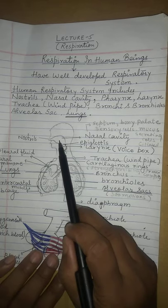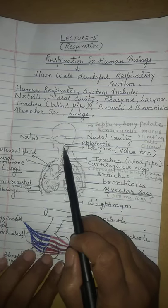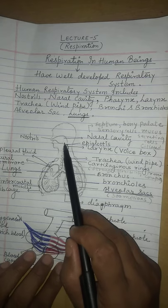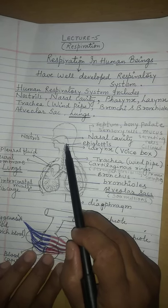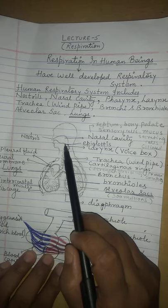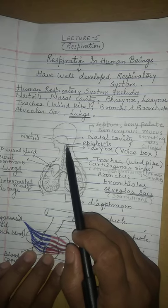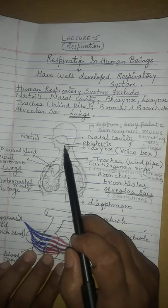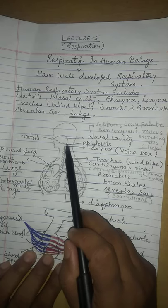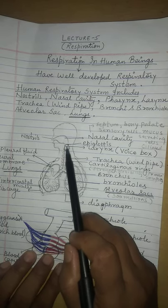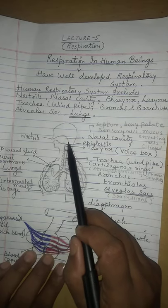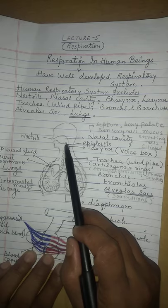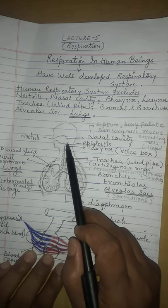The next structure is the pharynx. As discussed in the digestive system, the pharynx is a short tube where both the food pipe and wind pipe open. Keep in mind that the nasal cavity leads into a short tube called the pharynx.